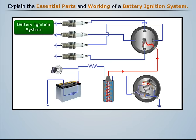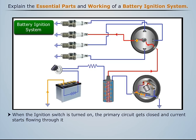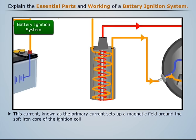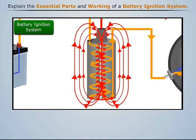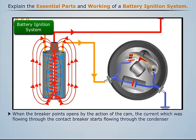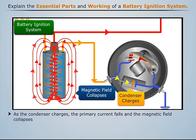Now let's understand the working of the ignition system. When the ignition switch is turned on, the primary circuit gets closed and current starts flowing through it. This current, known as the primary current, sets up a magnetic field around the soft iron core of the ignition coil. When the breaker points open by the action of the cam, the current which was flowing through the contact breaker starts flowing through the condenser. As the condenser charges, the primary current falls and the magnetic field collapses.